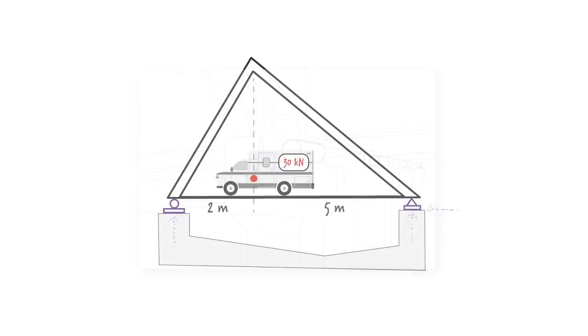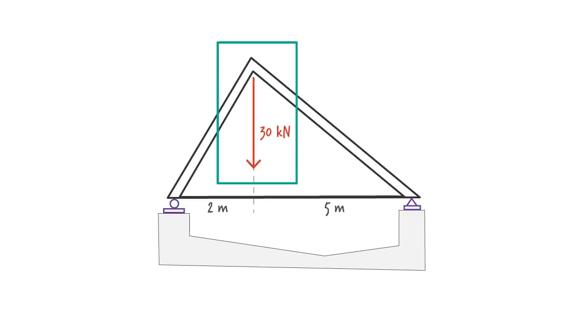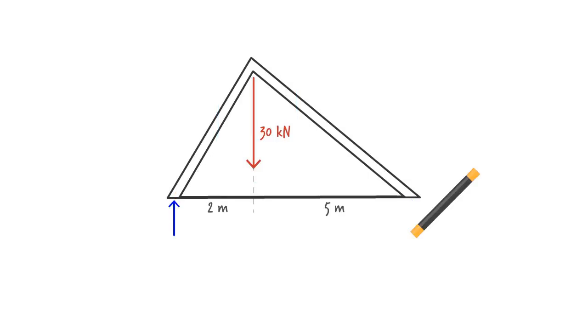Suppose our bridge is subjected to a single concentrated load of 30 kN. The load is assumed to be acting at the center of gravity of the vehicle. In order to determine the support reactions of the bridge, we should draw its free body diagram. Our diagram must include the applied load, the reaction forces at the supports, and the distances between these forces.